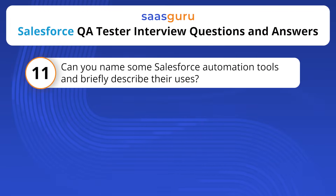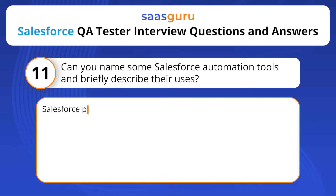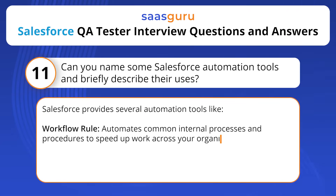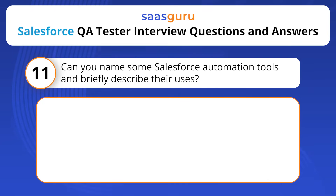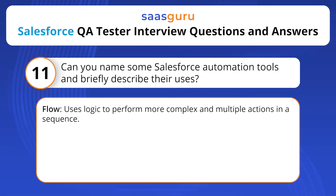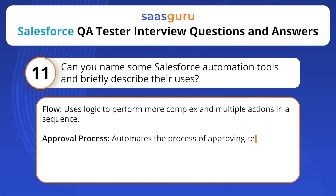Can you name some Salesforce automation tools and briefly describe their uses? Salesforce provides several automation tools: Workflow Rule automates common internal processes and procedures to speed up work across your organization; Process Builder uses logic to perform more complex and multiple actions in a sequence; and Approval Process automates the process of approving records.